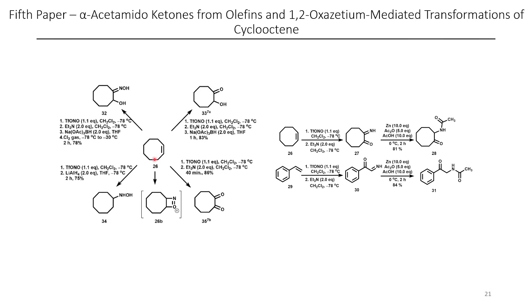In this example, they show how cyclooctyne could be treated under a number of different conditions to afford different sorts of products. In this first example, you can see that this alpha-hydroxyoxime is formed, while in the case of 33, this alpha-hydroxyketone is formed. Depending on how they do the workup, they actually form the imine — the NH-imine — which can be hydrolyzed finally to afford the corresponding ketone, but in this case they get the oxime because they chlorinate the imine, and upon hydrolysis this affords them with the oxime instead of the N-chloroimine. If instead they reduce it with LAH, they get the hydroxylamine. All of these reactions are occurring through the intermediate 26B.